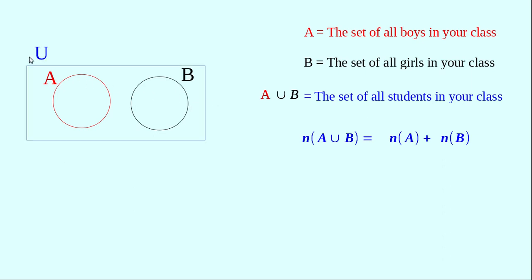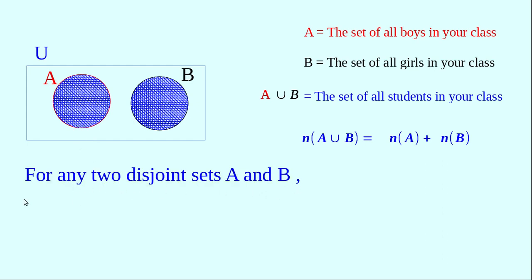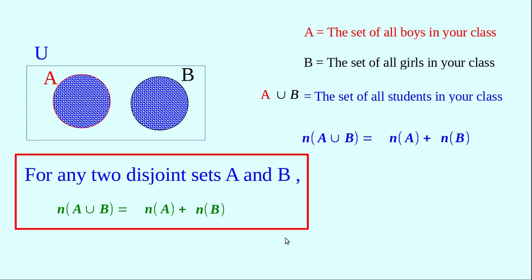A and B are two disjoint sets as shown in the figure. To find n(A∪B), first count the total number in A, that is n(A), then add n(B). The sum of these two numbers is n(A∪B). This means that for any two disjoint sets A and B, n(A∪B) = n(A) + n(B). The term disjoint is important — if the two sets are not disjoint, this result does not hold.